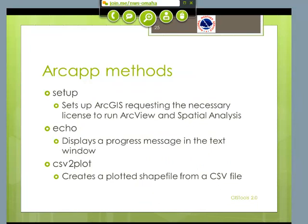Setup is the second thing you would run. This basically sets up ArcGIS and requests the license to run ArcView and Spatial Analyst. This routine can take several seconds depending on how busy the license servers are. Echo is just a simple way of writing a message into that text window, so the programmer really doesn't have to know anything about TK if they don't want to. CSV to plot does exactly what it says — it will take a CSV file that has latitude, longitude, and some type of data, and create a plotted shape file. This one actually runs quite quickly.